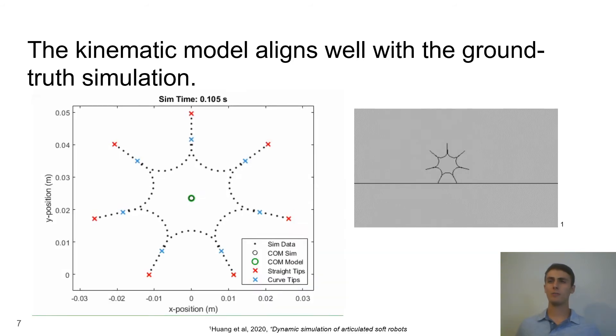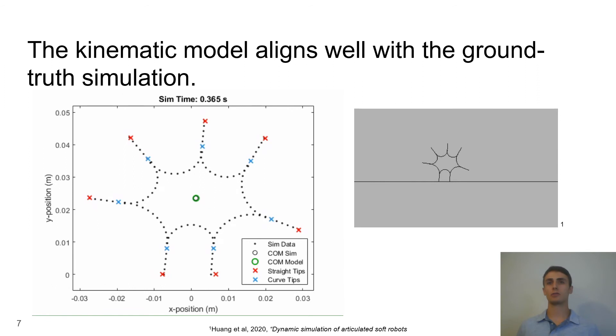By comparing our model to a ground truth simulation we can get a sense of the performance of our model. Based on the video shown on the left you can see that the outputs of our model, which are shown by colored markers, track the position of the robot in the simulation, which is shown by black markers, very well. The video on the right shows the actual simulation.